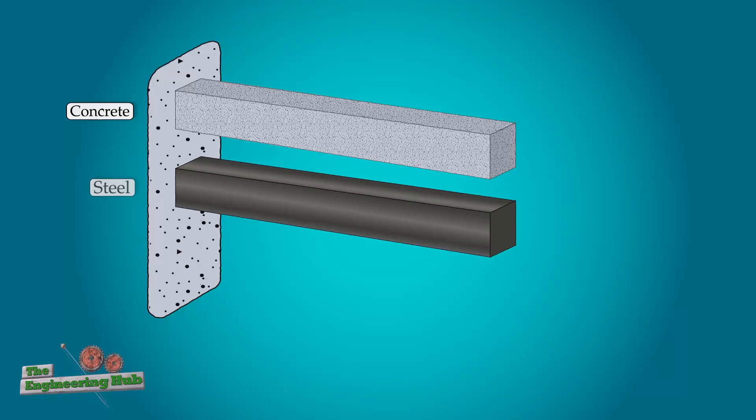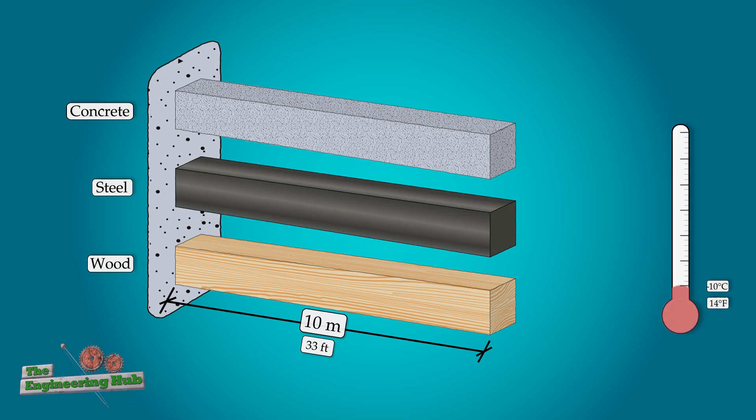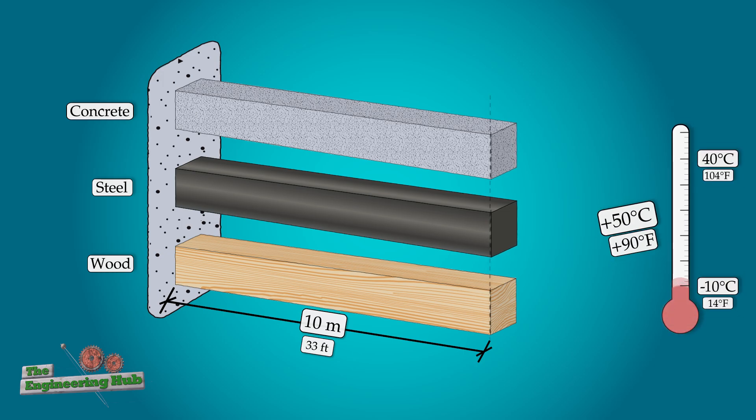Let's take a concrete beam, a steel beam, and a wood beam and see how they react to thermal stress. Each beam will be 10 meters long and we'll start the temperature at minus 10 celsius then crank it up to plus 40 celsius.